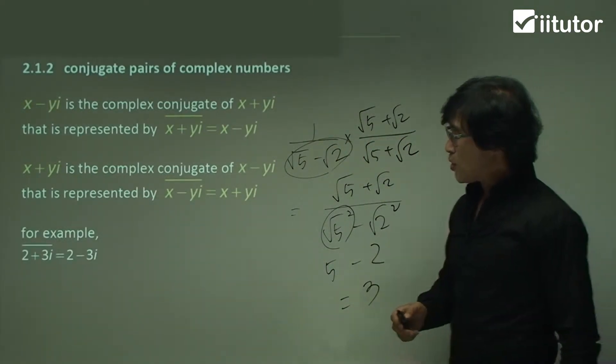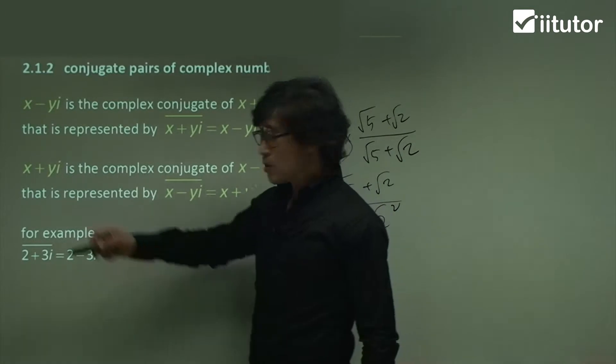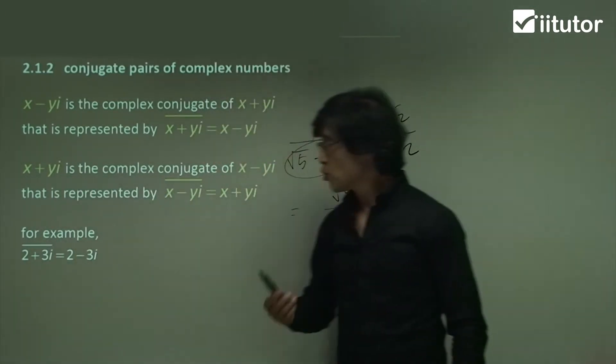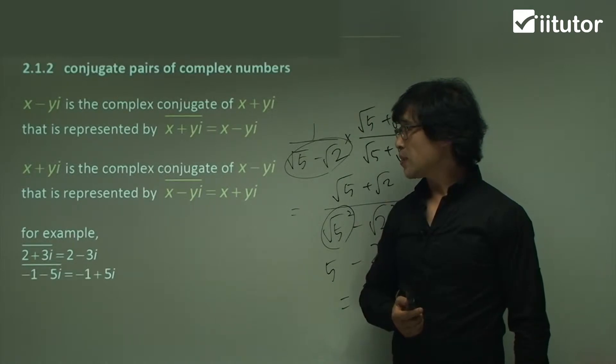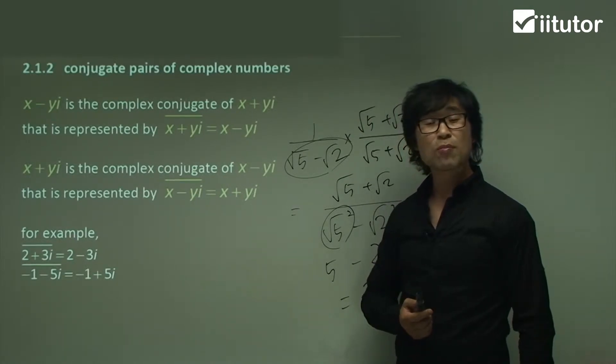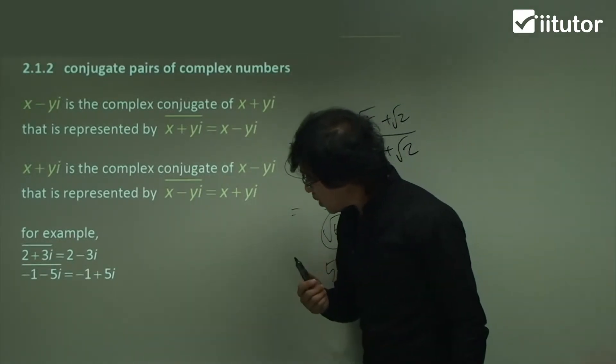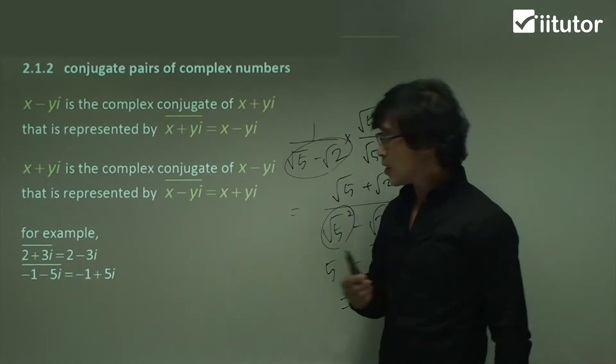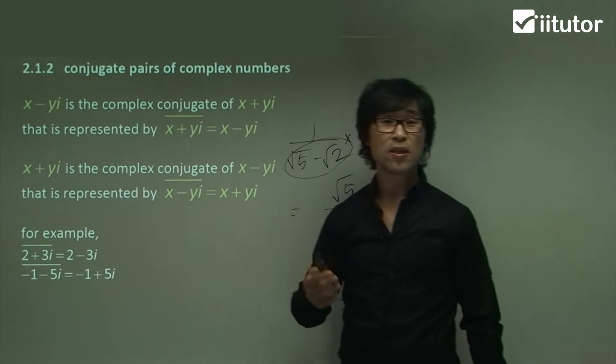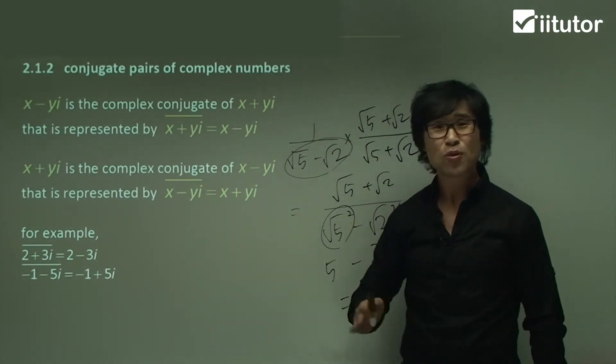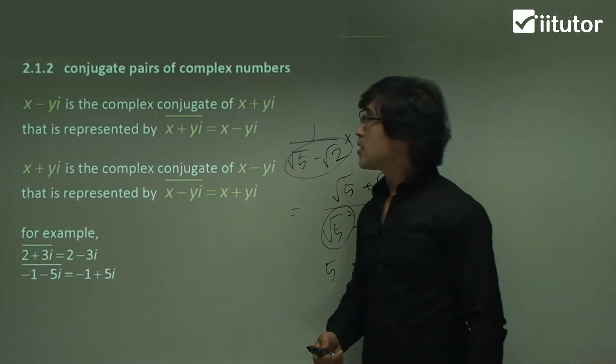What you can do the example, in your example, so 2 plus 3i, so conjugate pair of 2 plus 3i is 2 minus 3i. And conjugate pair of minus 1 minus 5i is minus 1 plus 5i. So all you need to recognize is change the sign just in front of the i. So that's all you need to remember. So let's get to the question.